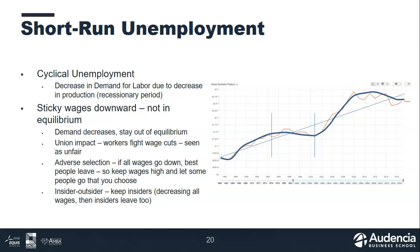One reason this happens is what economists call sticky wages — wages do not tend to fall very much. Wages will sometimes go up, but when we try to lower them, wages don't go down. And we need wages to go down to find equilibrium. There are several reasons why this can happen.